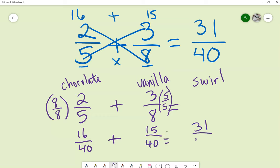And I get my answer of 31 over 40, which is my swirl ice cream.